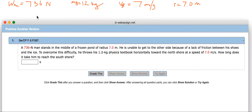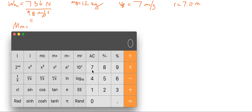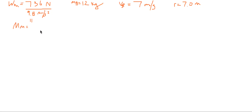So you have the weight of the man at 736 Newtons. The radius of the pond is 7 meters. The mass of the textbook is 1.2 kg and the velocity of the textbook is 7 meters per second. We can divide the weight of the man by 9.8 meters per second squared for gravity, which gives us the mass of the man: 75.10 kg.